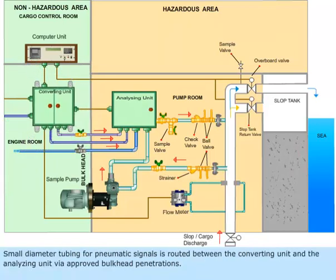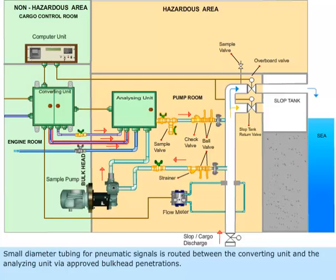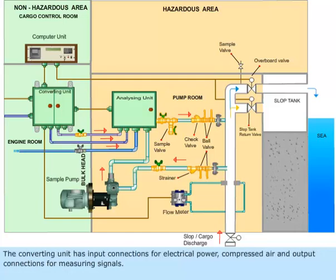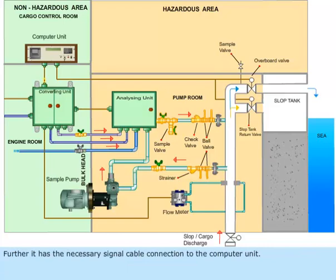Small diameter tubing for pneumatic signals is routed between the converting unit and the analyzing unit via approved bulkhead penetrations. The converting unit has input connections for electrical power, compressed air and output connections for measuring signals. It also has the necessary signal cable connection to the computer unit.